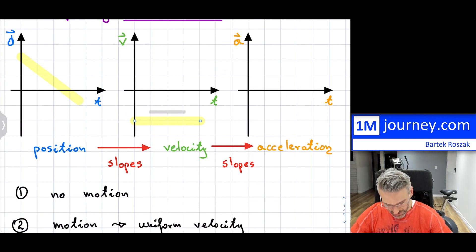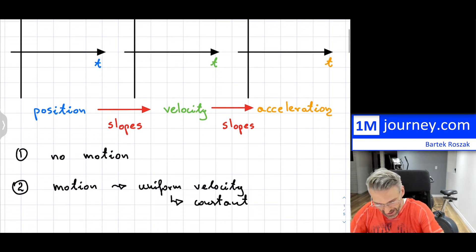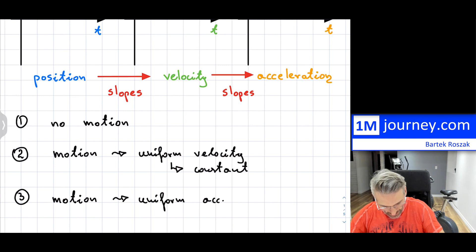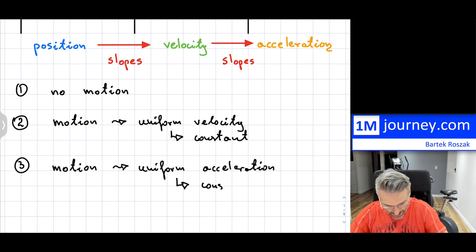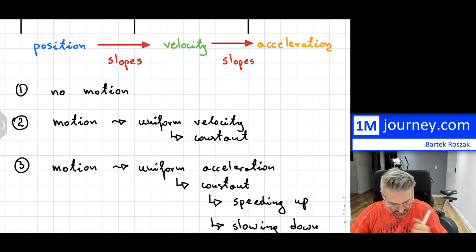Now the third case is the hardest because there are quite a few things happening. You are in motion and you have uniform acceleration. In introductory physics, this is really as far as you go in the initial stages. Uniform acceleration means your acceleration is constant — which means you are either speeding up or possibly slowing down.